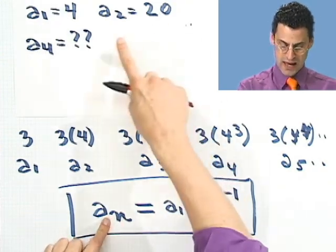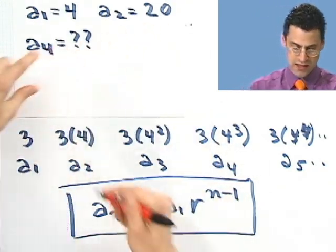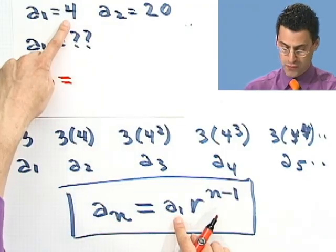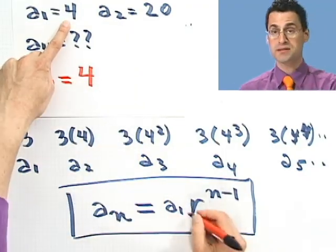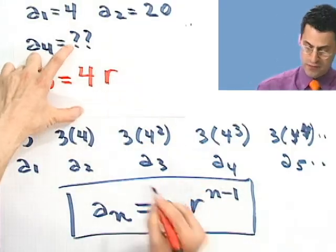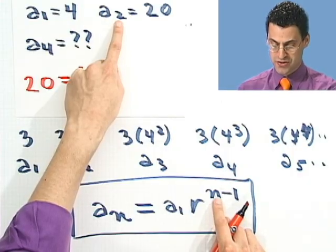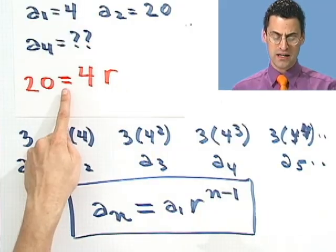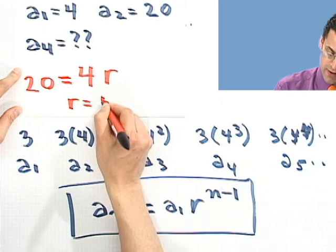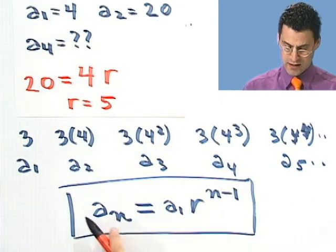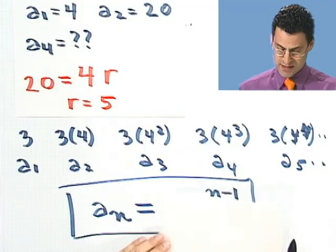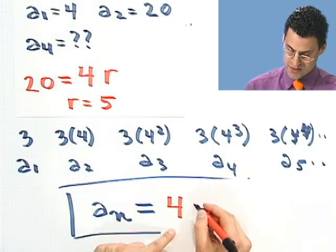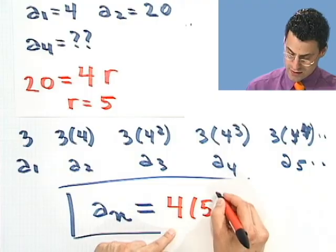It would tell me that a2, which I'm told is 20. So 20 would have to equal a1, which I know is 4, times this mysterious ratio, which I have no idea what that is, but raised to what power? Well, now I raise it to the n, which is 2 minus 1. 2 minus 1 is just 1. So I can now actually solve this for r. If 20 equals 4r, then I know that r must equal 5. And so then the formula, in this case, for this particular example, would look like this, an equals 4, because that's the a1, times r, which is 5, raised to the power n minus 1.